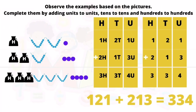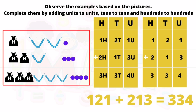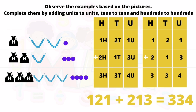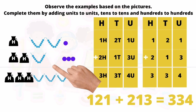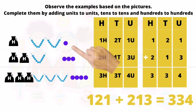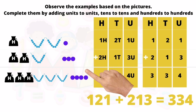Observe the examples based on the picture. Complete them by adding units to units, tens to tens, and hundreds to hundreds. Now we will learn how to place numbers in the hundreds, tens, and units place with the help of given objects. There are three different types of objects: a purse containing one hundred bits, a necklace containing ten bits, and a loose bit.